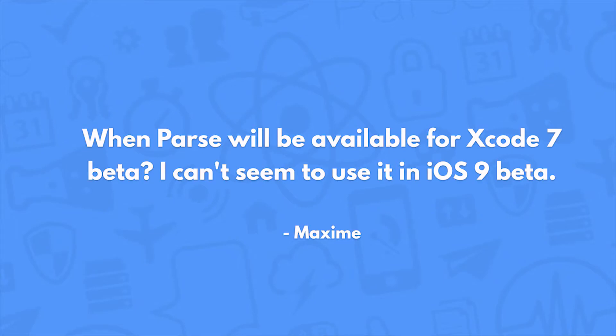When will Parse be available for the Xcode 7 beta? I can't seem to use it in iOS 9. The various iOS betas have been out for a couple of months now and we've been squashing issues as they pop up. The latest iOS SDK should work just fine on Xcode 7 beta 4, which is the current beta as of today. If you still run into any issues, please file a bug report and we will take care of it as quickly as we can.